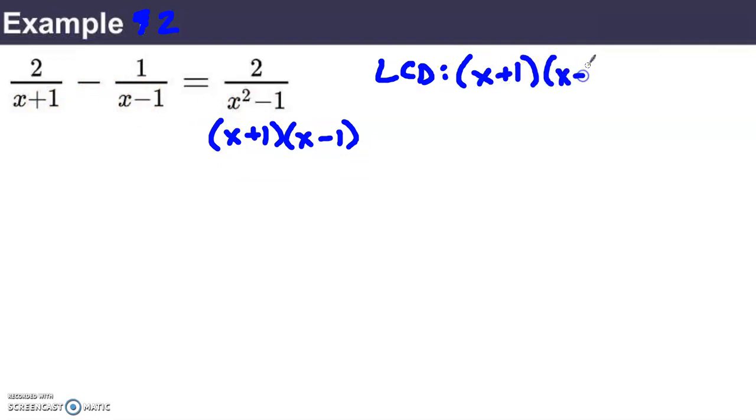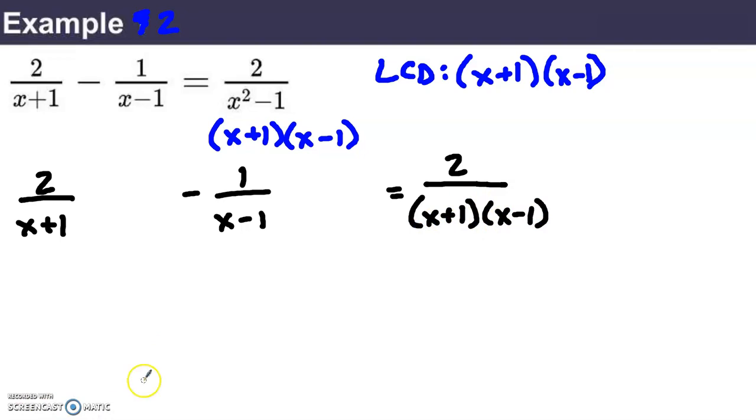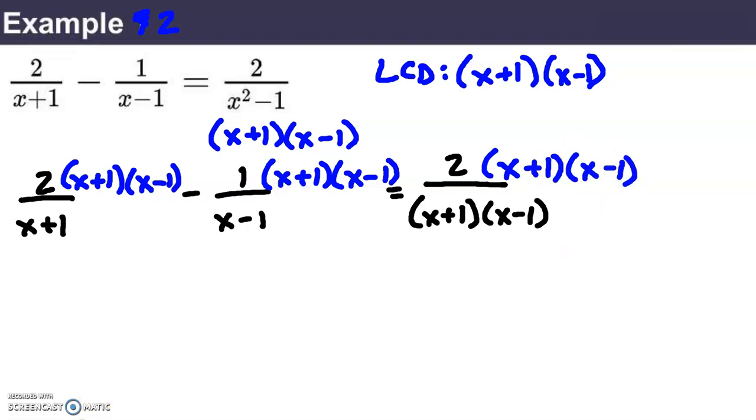So, what I'll do is I'll take the expression that we were given, 2 over x plus 1 minus 1 over x minus 1 equals 2 over, I think I'll write the factored form, x plus 1 times x minus 1. And let's multiply every term by the least common denominator, x plus 1 times x minus 1. What divides out, what simplifies? Well, the x plus 1's divide out in this term. In this term, the x minus 1's divide out. And in the term on the other side of the equal sign, both of the denominator terms are in the LCD as well. So, we can divide them all out.